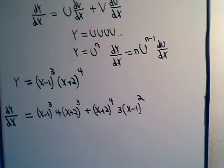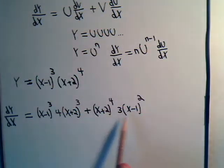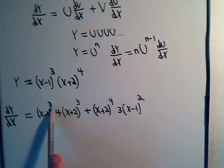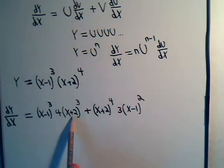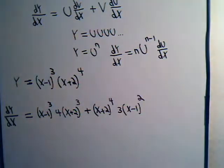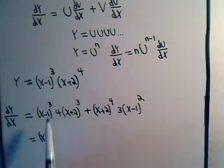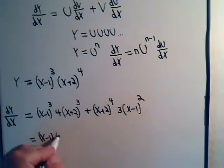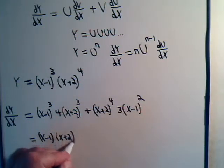So dy/dx — we might be able to do a little bit of algebra with this. Because here we have two terms being added. Here we have x minus one, and here we have x minus one. Here we have x plus two, and here we have x plus two. So we should be able to factor these out. We're going to take out an x minus one, which is common to both terms, and an x plus two, which is also common to both terms. We take out the one raised to the smallest power.